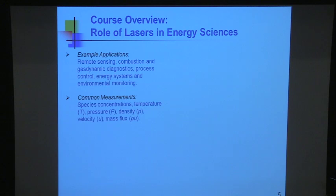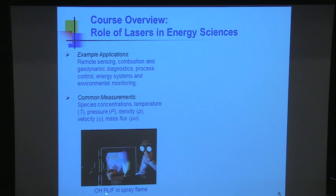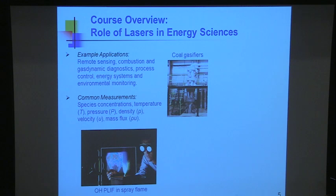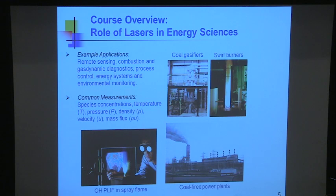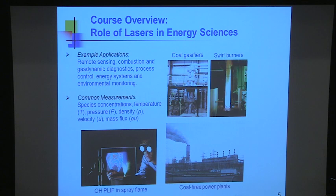Here's an example from 1986. The method called planar laser-induced fluorescence was born in my laboratory in 1981 — a long time ago. This was one of the very first images of OH, the hydroxyl radical, in a spray flame. We've taken these techniques to large-scale coal gasifiers, swirl burners that simulate gas turbine combustors, and coal-fired power plants. Some of these methods are very portable — I call them field deployable. We put them in a suitcase and take them on the road. Other methods are very difficult to move, fitting on an optical table eight feet long.